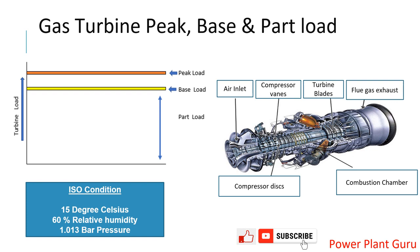So what should we consider as the full load condition of this machine? Full load condition is also called base load condition, which is the condition the machine is designed to operate at continuously. To clear this doubt arising from different ambient or site conditions, ISO conditions are defined by the equipment manufacturer. ISO conditions are standard conditions in which specific parameters are set — inlet air temperature is 15 degrees Celsius and relative humidity is 60% RH.